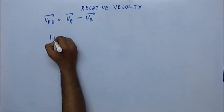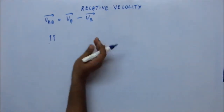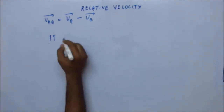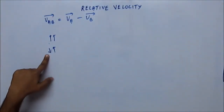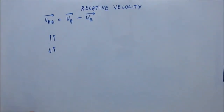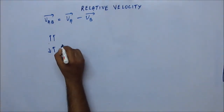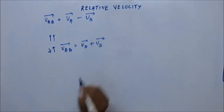Suppose A and B are moving in the same direction — then velocity of A with respect to B will be the simple subtraction of velocity of A and velocity of B. If they are moving in opposite directions, then you have to take the sign into account. If you consider A's direction positive, then the velocity of B will come with a negative sign. So in that case, velocity of A with respect to B will actually be velocity of A plus velocity of B — they will be added up.